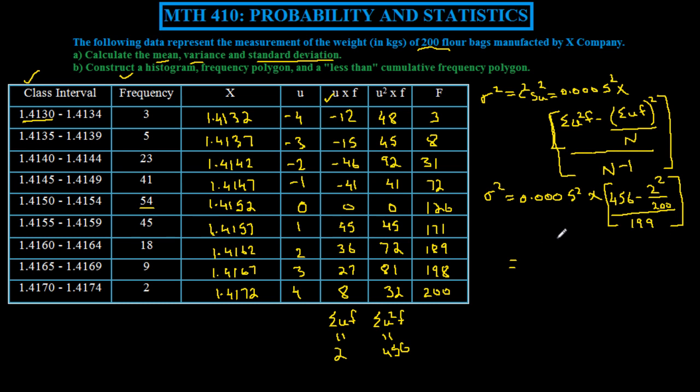This equals 57.283919 times 10 to the power of minus 8, or e minus 8. Therefore, our standard deviation is equal to the square root of variance, which equals 0.00076.